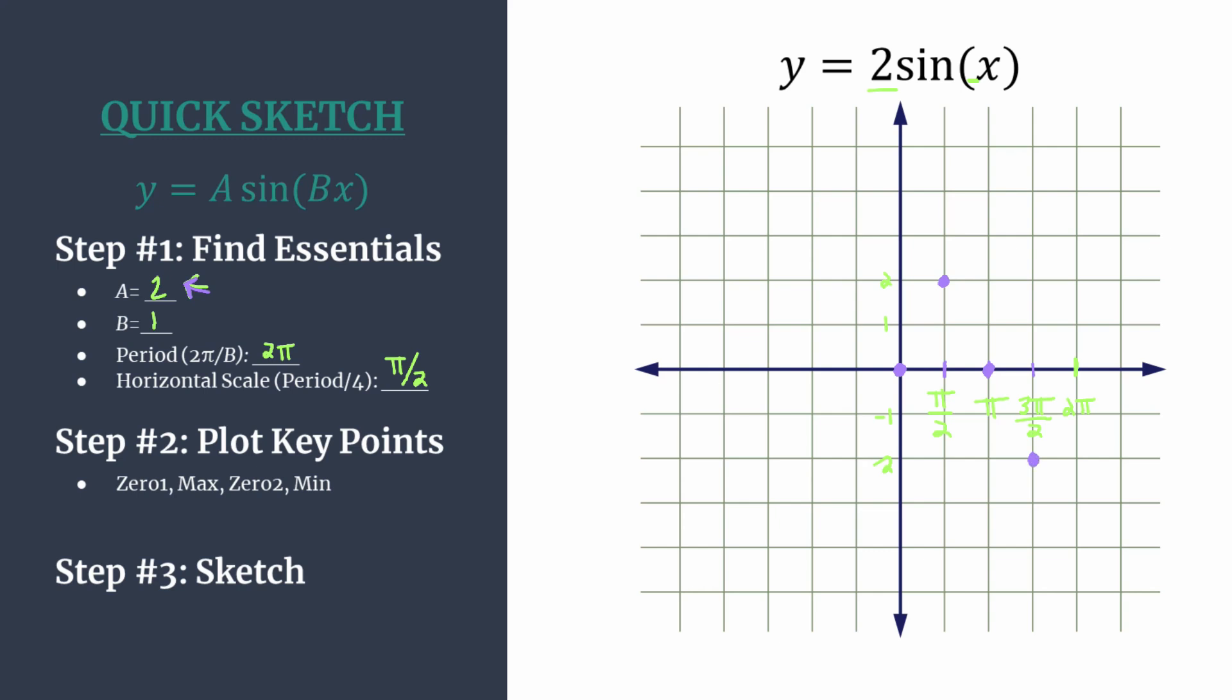To get the y coordinate here, just take the opposite value of a, so that's at negative two. You can see that's still an amplitude of two, distance from that midline which is here on the x-axis, up to a maximum or down to a minimum, a distance of two units.